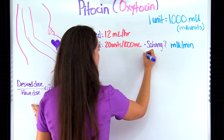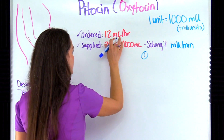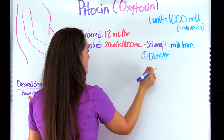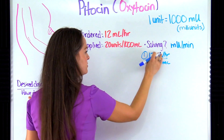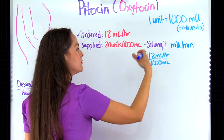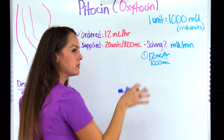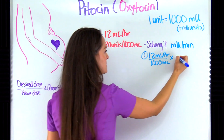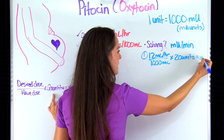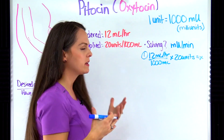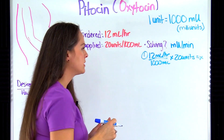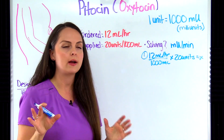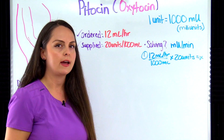Let's plug into our formula. The desired dose is 12 milliliters per hour over the halve dose of 1000 milliliters, multiplied by the quantity of 20 units, equals x. The milliliter units match up, which is good. But the answer needs to be in milliunits, and the quantity is in units, so we need to convert. Going from units — something large — to milliunits — something small — we multiply: 1000 times 20 equals 20,000 milliunits.